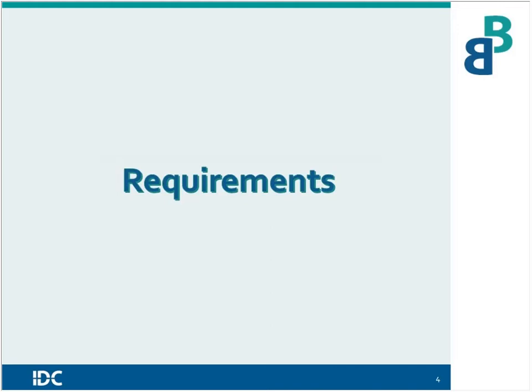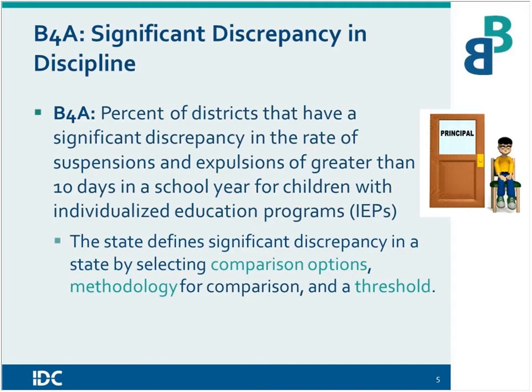We're going to start today with B4A and significant discrepancy in discipline. States must report the percent of districts that have a significant discrepancy in the rate of suspensions and expulsions for children with disabilities. In order to do that, states have to have defined significant discrepancy. Although the indicator requires you to report a certain percent, it gives states some flexibility in how they define significant discrepancy. Significant discrepancy will be defined by your comparison option, the methodology for doing your calculations, the threshold, and some states will also use a minimum N or cell size.